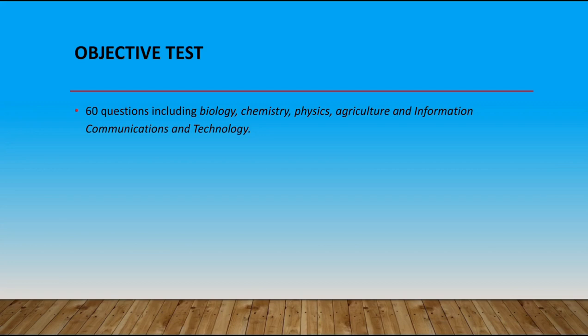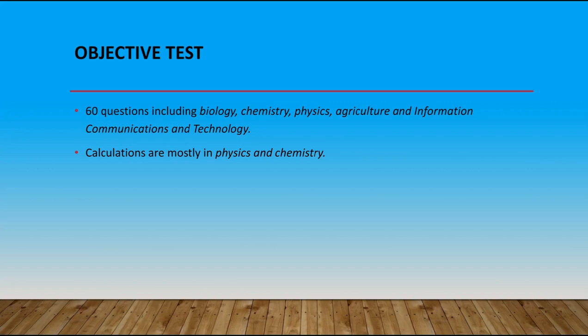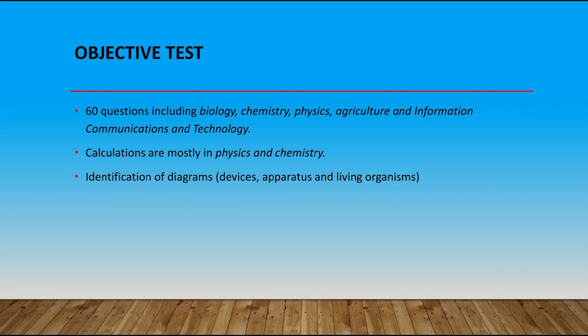The questions in the objectives include things you've already read in your notes. When it comes to calculations, they are mostly on physics and chemistry, but sometimes they ask questions on agriculture — and with agriculture, the questions are mostly basic mathematics, nothing too challenging. On the objective section, you also have to sometimes identify diagrams, devices, apparatus, and organisms, and answer questions based on those diagrams. Keep that in mind as you prepare for the WASSCE Integrated Science exam.